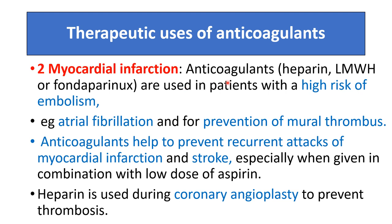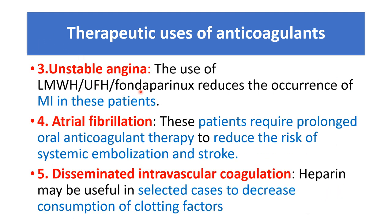In myocardial infarction, anticoagulants are used in patients with high risk of embolism, such as atrial fibrillation, and for prevention of mural thrombosis. They help prevent recurrent attacks of myocardial infarction and stroke, especially when given in combination with low-dose aspirin. Heparin is used during coronary angioplasty to prevent thrombosis. In unstable angina, low molecular weight heparin, unfractionated heparin, and fondaparinux reduce the occurrence of myocardial infarction. In atrial fibrillation, patients require prolonged oral anticoagulant therapy to reduce risk of systemic embolization and stroke. In disseminated intravascular coagulation, heparin may be useful in selected cases to decrease consumption of clotting factors.